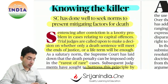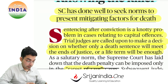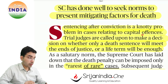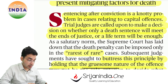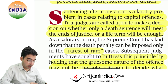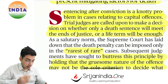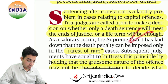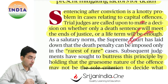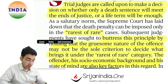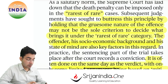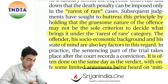Then this is the editorial: 'Knowing the Killer' — death penalty. Sentencing after conviction is a knotty problem in cases relating to capital offenses. If you have conviction that someone is guilty — will they get 10 or 20 years, or life? The decision is difficult: whether only a death sentence will meet the ends of justice, or whether a life term will be enough. Trial judges are called upon to make this decision. The norm for death penalty is the rarest of rare case — the offense must be of a very gruesome nature.